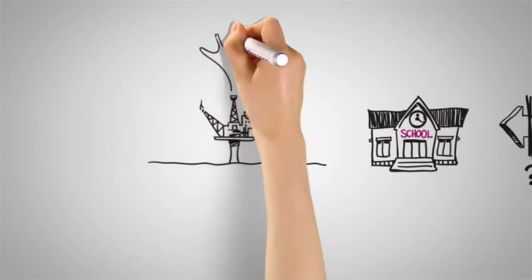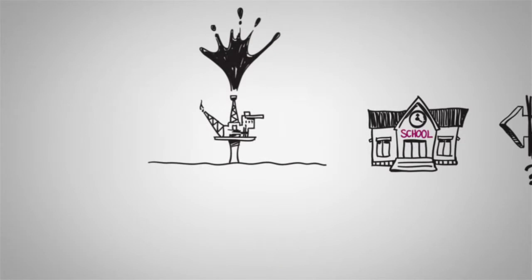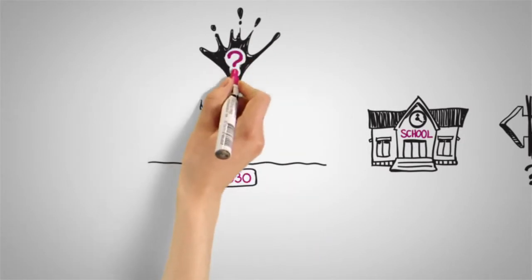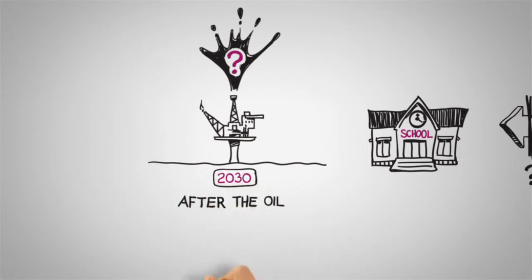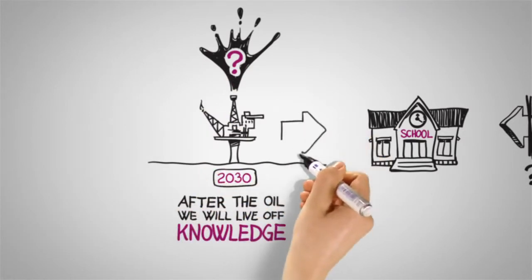Norway currently makes a good living from its oil. However, it could all be gone by as soon as 2030. People say that after the oil, we will live off knowledge.